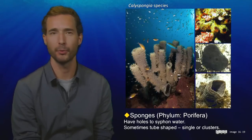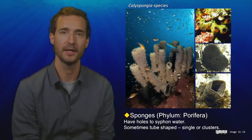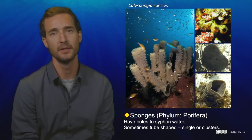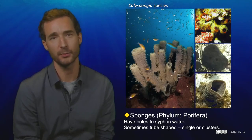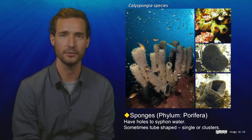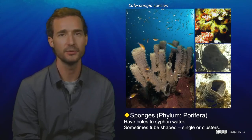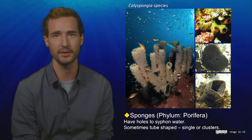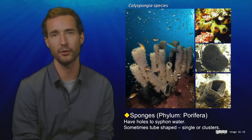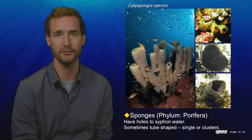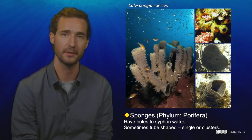Sponges belong to the phylum Porifera, and they are one of the oldest forms of life on Earth. Like most of the corals, sponges are actually colonies of many individuals living together. Sponges come in a wide variety of shapes, sizes, and colors, but they all have holes through which they suck seawater as they filter-feed on small particles suspended in the water.